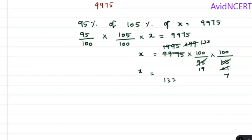Which is 133 times 100 times 100 is 10,000 divided by 19 times 7 is 133. So 133 gets cancelled. So X equals 10,000.